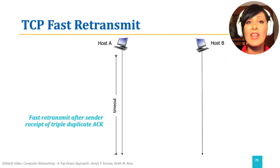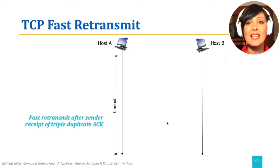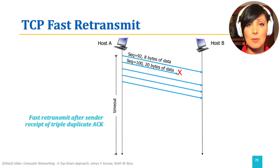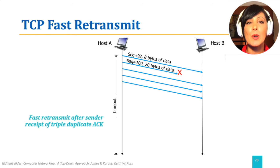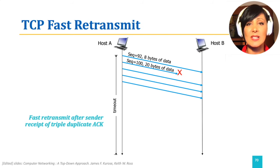Let's explore this with an example. Assume the sender, host A, sends the first segment with sequence number 92 and 8 bytes, and the second segment with sequence number 100 and 20 bytes, and three more following segments with higher sequence numbers after.